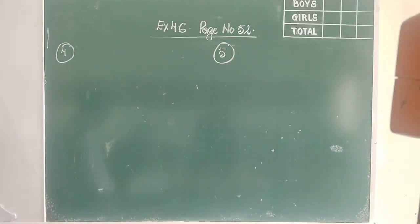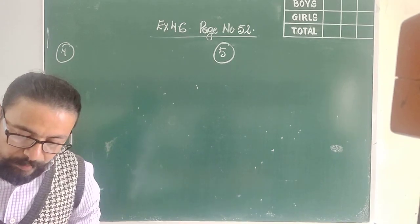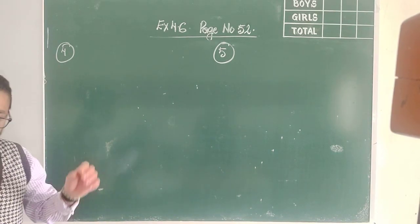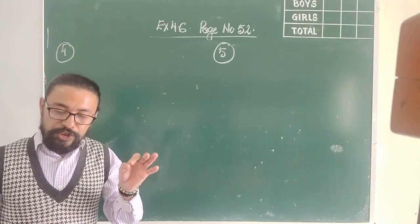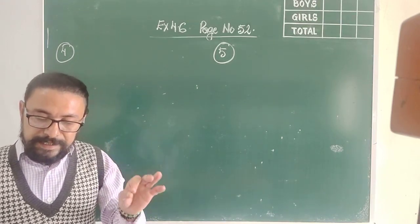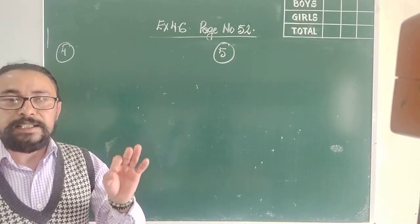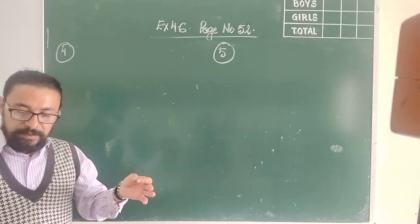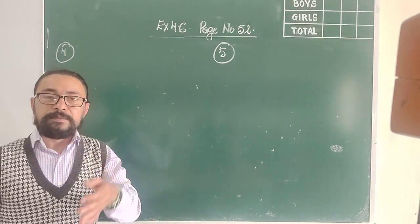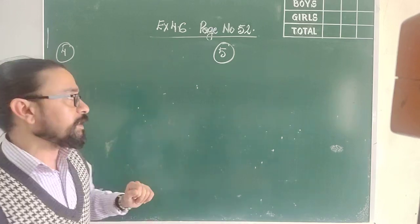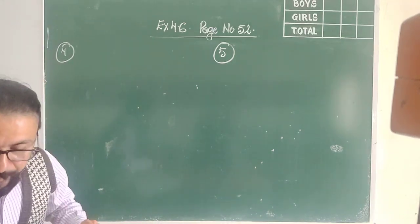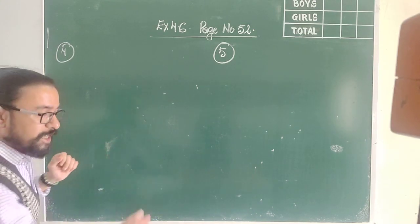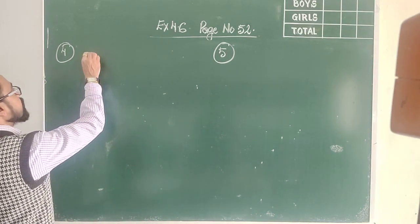Sum number 4 says: find the smallest number which is exactly divisible by 48, 36, and 72. When they ask you to find the smallest number that is divisible by these numbers, that means you have to find the LCM. The solution I am showing you on the board — 48, 36 and 72.